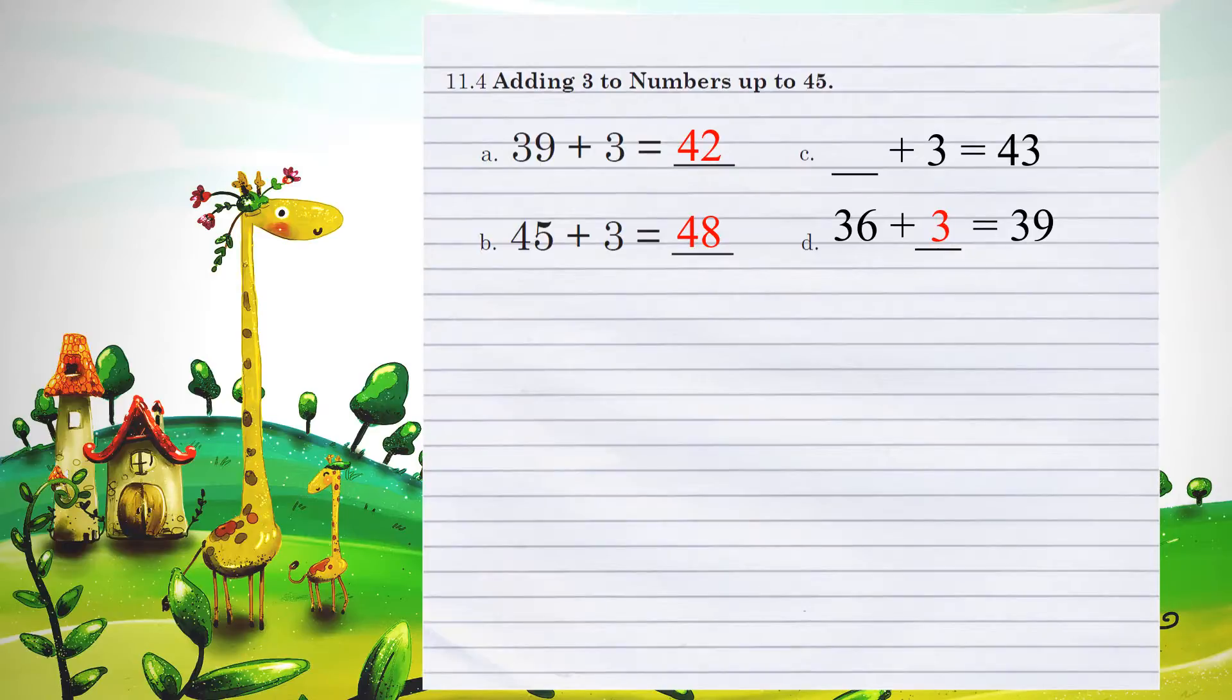Example C. What number plus 3 equals 43? So what number would we have to start with that when we add a 3 to it gives us an answer of 43? Well, we know that 0 plus 3 is 3, so therefore we are starting with 40. We add the 3 to the 0. That gives us 43.